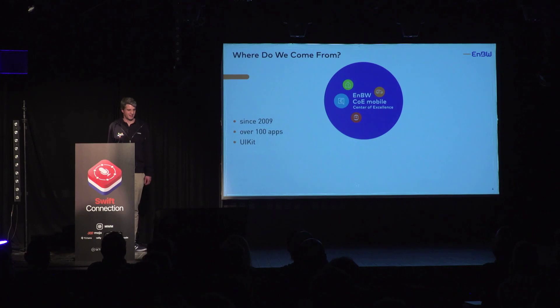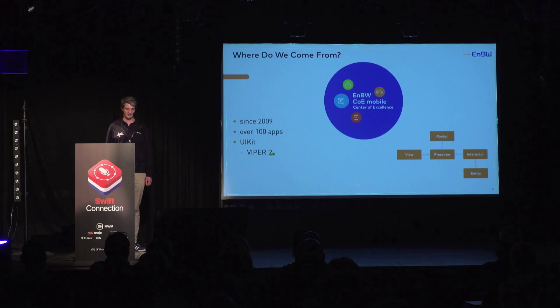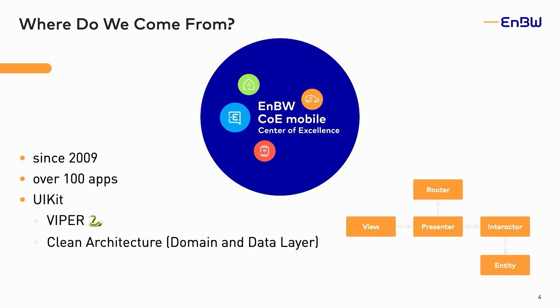We started back then with UIKit, and the architecture we adopted after some years was Viper — the View, Router, Presenter, Interactor, and Entity. That's where the name comes from. We also always maintained a clean architecture approach in our apps, so that the domain and data layer is divided from the application or UI layer.